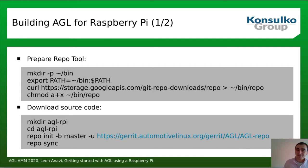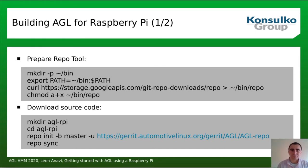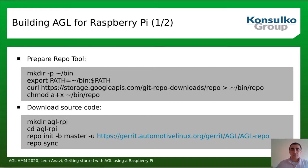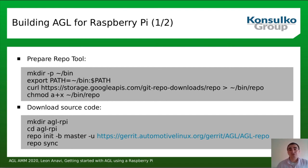Let's have a look at the exact steps to build a demo image of AGL for Raspberry Pi. I'll be using Raspberry Pi 4. The first step — done only once — is to prepare Google Repo 2. Repo 2 was developed for Android; a manifest file contains a collection of several Git repositories, one for each meta-layer. Repo 2 helps manage them all.